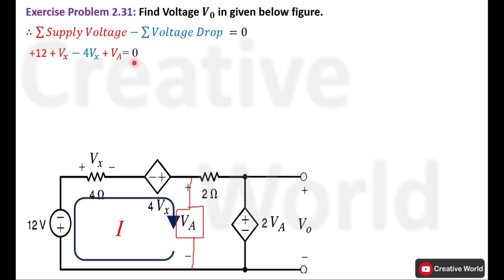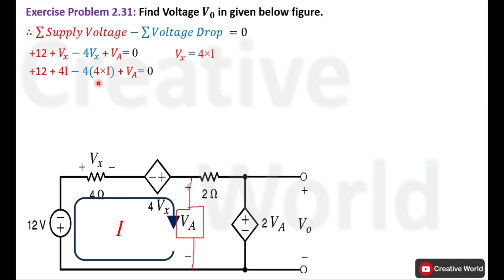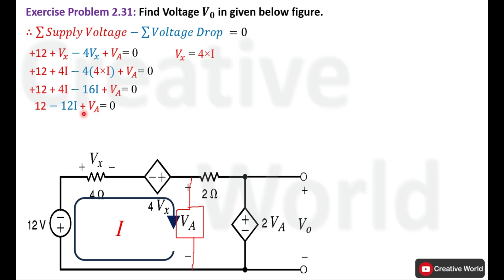Plus Va equals zero. Now solve this equation. Replace Vx with its value — the product of current through this resistance and resistance value: i multiplied by 4 ohm, so Vx equals 4i. Place the value of Vx into the equation: Vx is replaced with 4i in both places. Opening brackets and multiplying, the equation becomes: 12 plus 4i minus 16i plus Va equals 0. Subtracting 4i from 16i gives minus 12i, so the equation is: 12 minus 12i plus Va equals 0. Since there are two unknowns, Va and i, we label this as equation A.